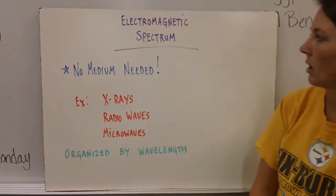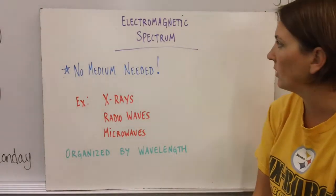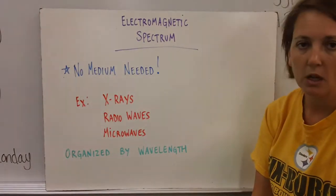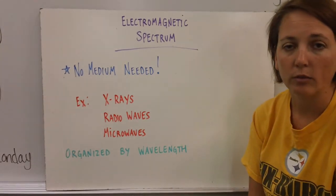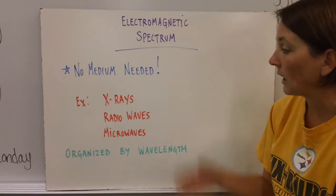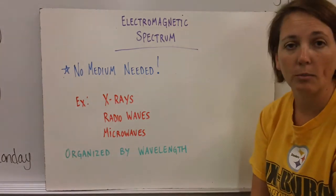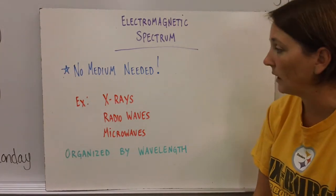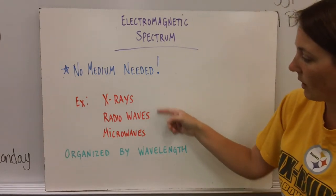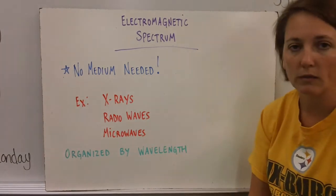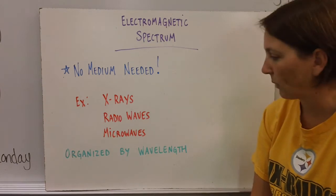The last kind we're going to talk about in this particular video is called the electromagnetic spectrum. These two, there is no medium needed. They can travel through empty space, which means light waves are actually on the electromagnetic spectrum because light waves don't need a medium either. Some other examples of waves on this spectrum. X-rays, radio waves, and microwaves are all on this particular spectrum as well.